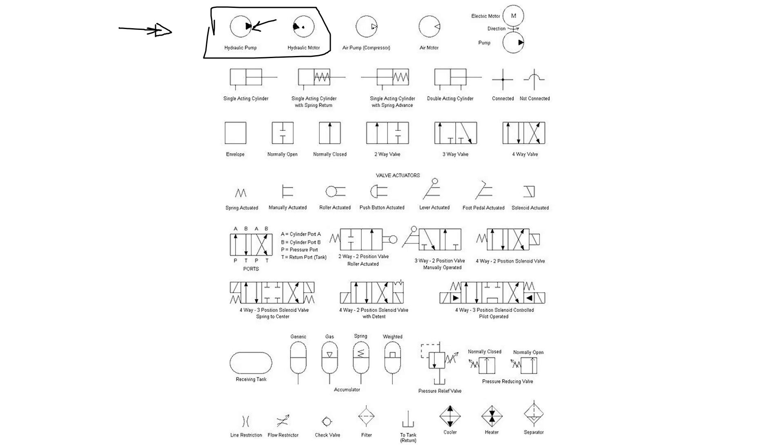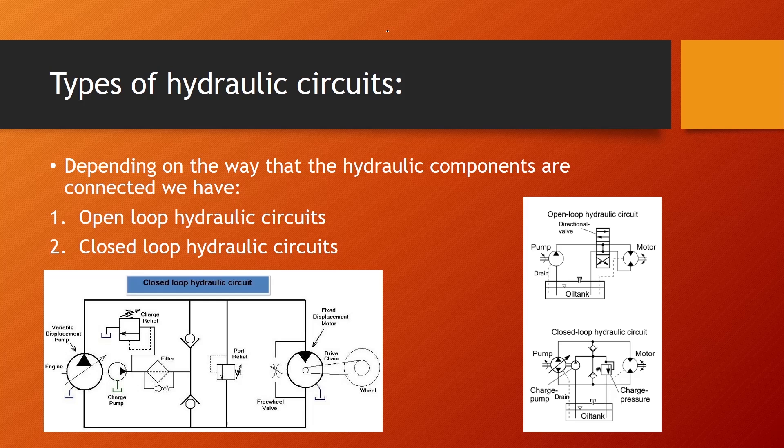Depending on the way that the hydraulic components are connected, we have two types of circuits: open loop hydraulic circuits and closed loop hydraulic circuits. In an open loop hydraulic system, the pump inlet and actuator return ports are connected to a fluid reservoir, as we can see on this picture right here. Unlike a closed loop circuit, in this type of system, the pump provides continuous fluid flow to the system, as you can see right here.